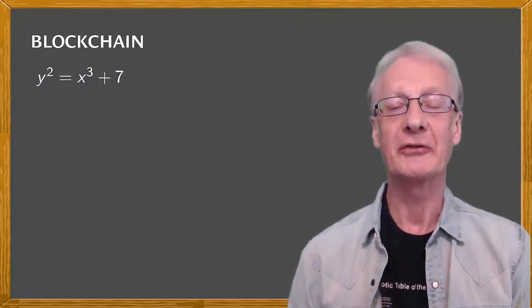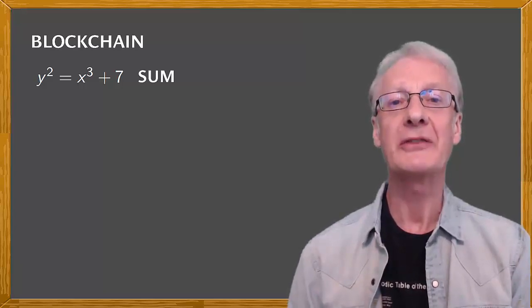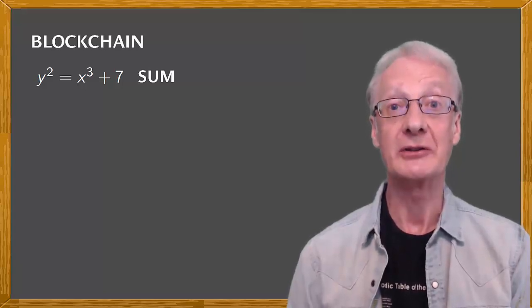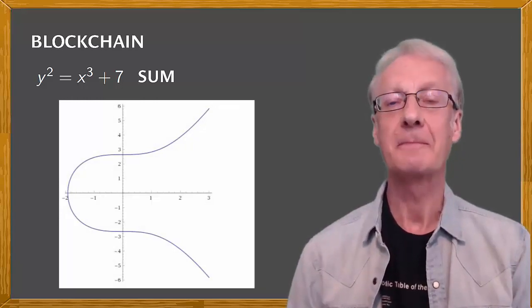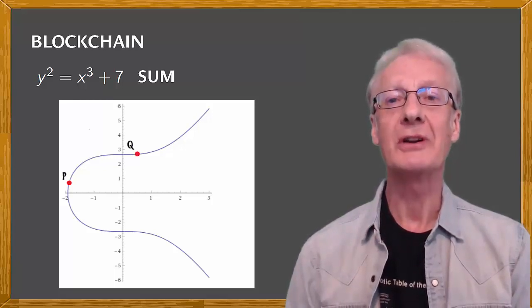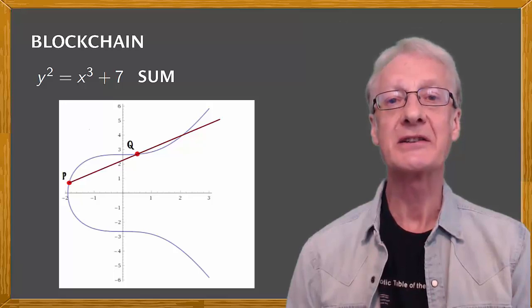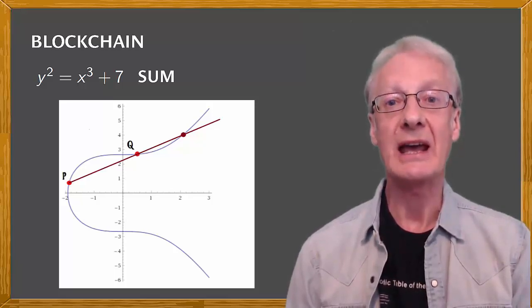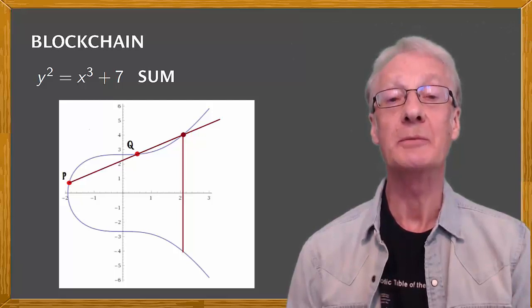For any elliptic curve, we can define a sum operation. This isn't like ordinary addition, but is a way of combining two points that's known as point addition. Say we have two points, P and Q, which lie on the elliptic curve, like those shown on the screen. What's their sum? We draw the line that joins these two points, and extend it until it intersects the curve at a third point. Then, we find the point that is symmetrical to this in the X axis. This is what we refer to as the sum of P and Q, P plus Q.